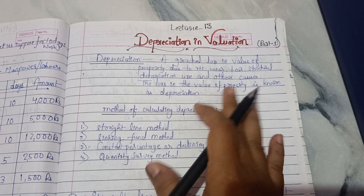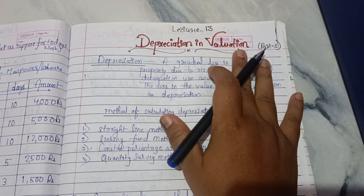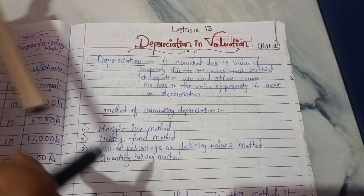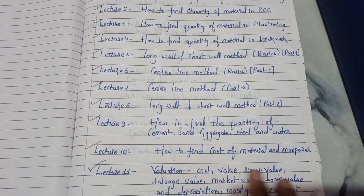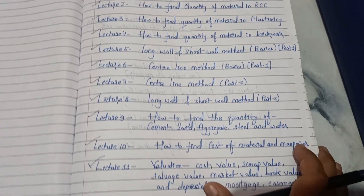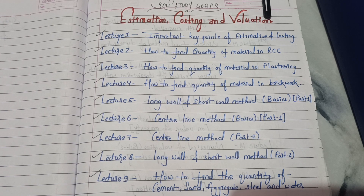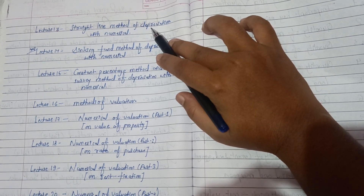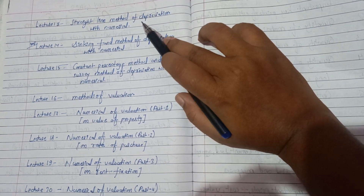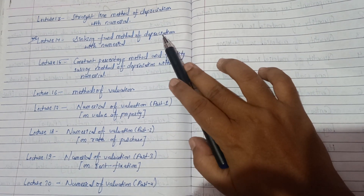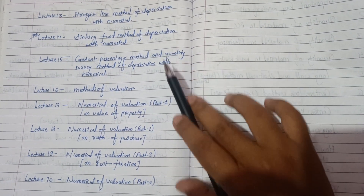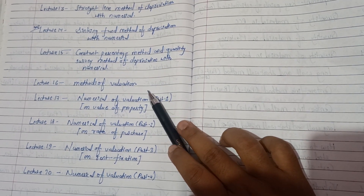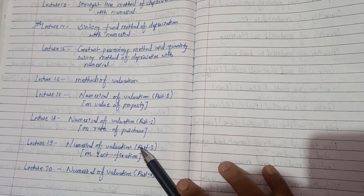Welcome back to my YouTube channel. In this lecture we are going to see depreciation in valuation. This is lecture 13 of the Estimation, Costing and Valuation series. We have already covered all 12 previous lectures, available in the playlist. In this lecture we are going to see the straight line method of depreciation with the help of numericals, and in upcoming lectures we will see the sinking fund method and other methods of depreciation.